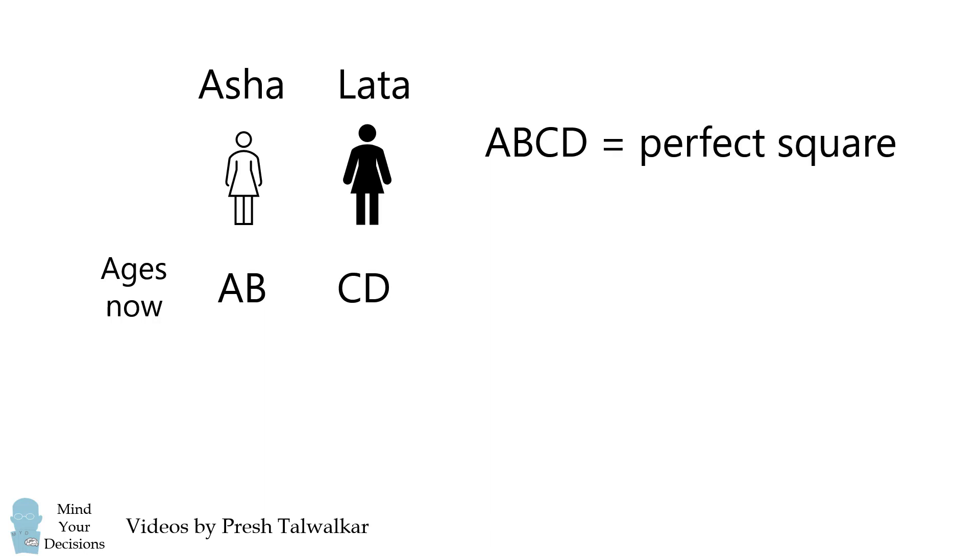An interesting thing happens if you repeat the exercise in 11 years. If again you write Latha's age after Asha's age, you get a four-digit number that also happens to be a perfect square.